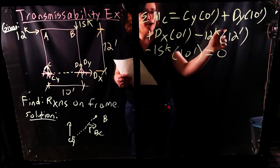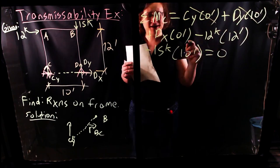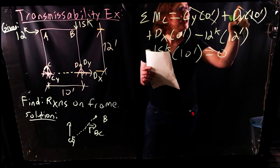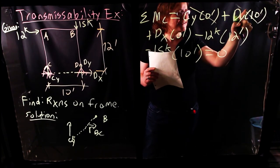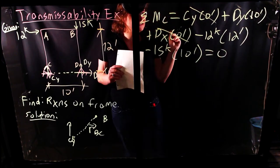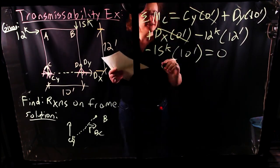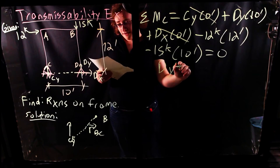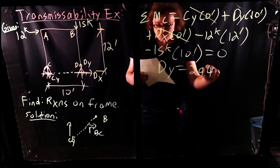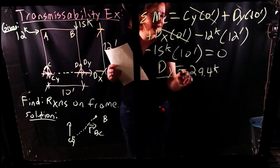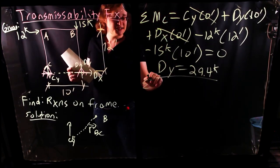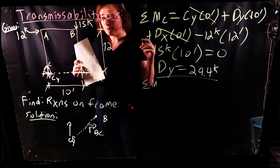So D-Y equals 29.4 kips. Then I could do the same thing: summation of moments about point D, counterclockwise positive.